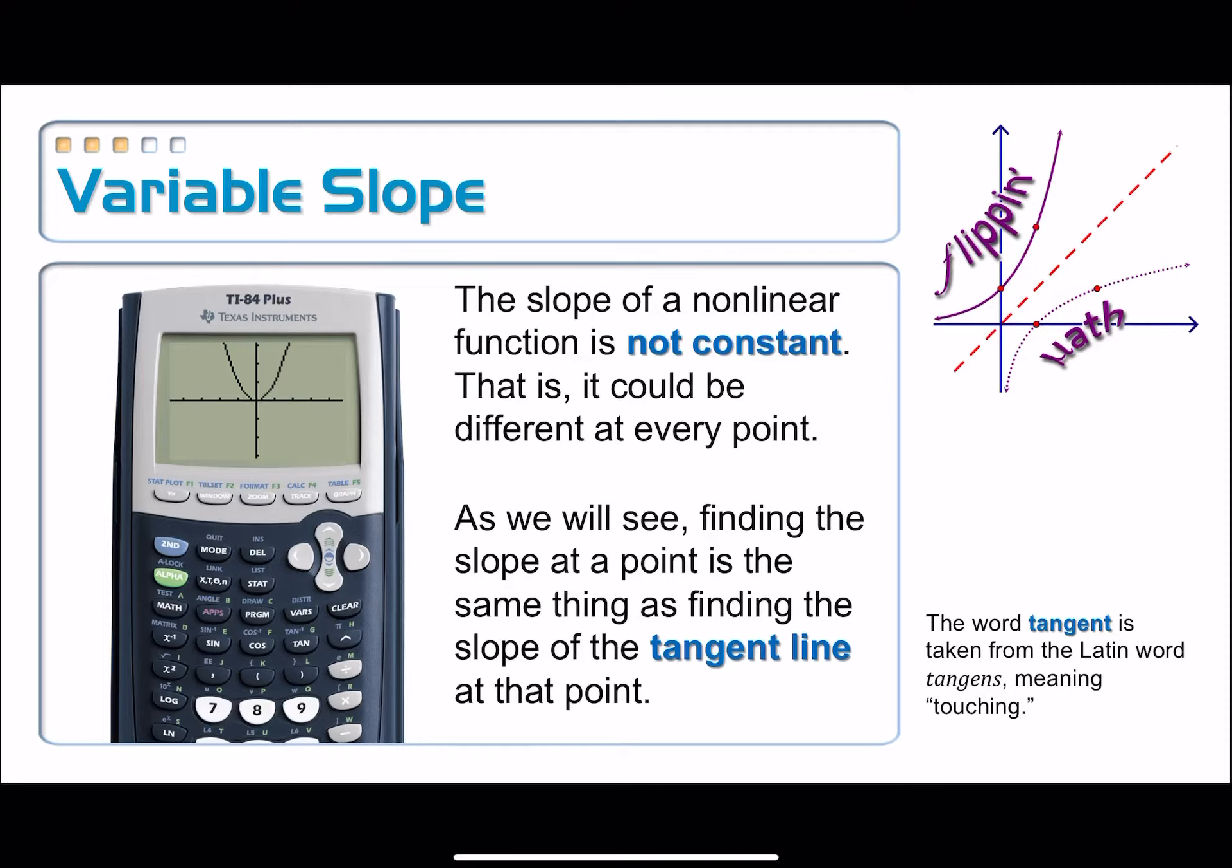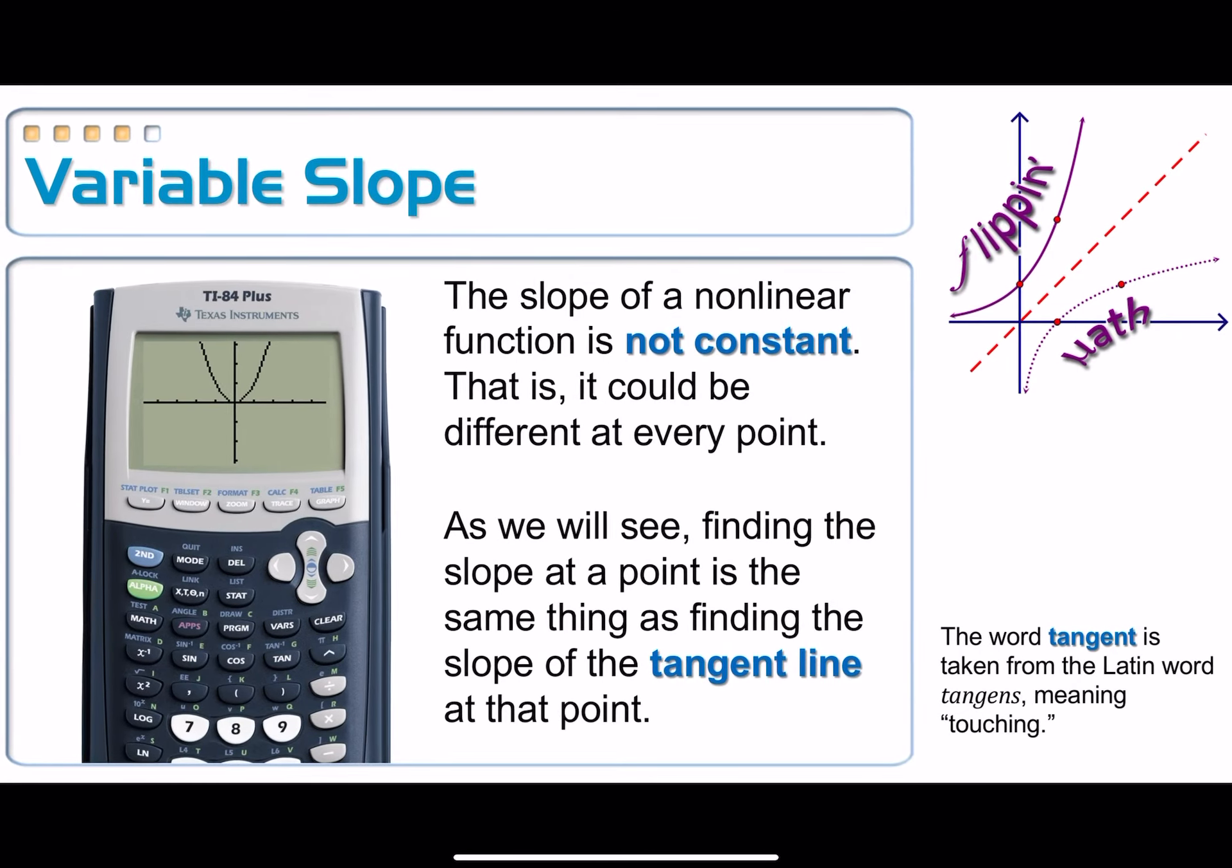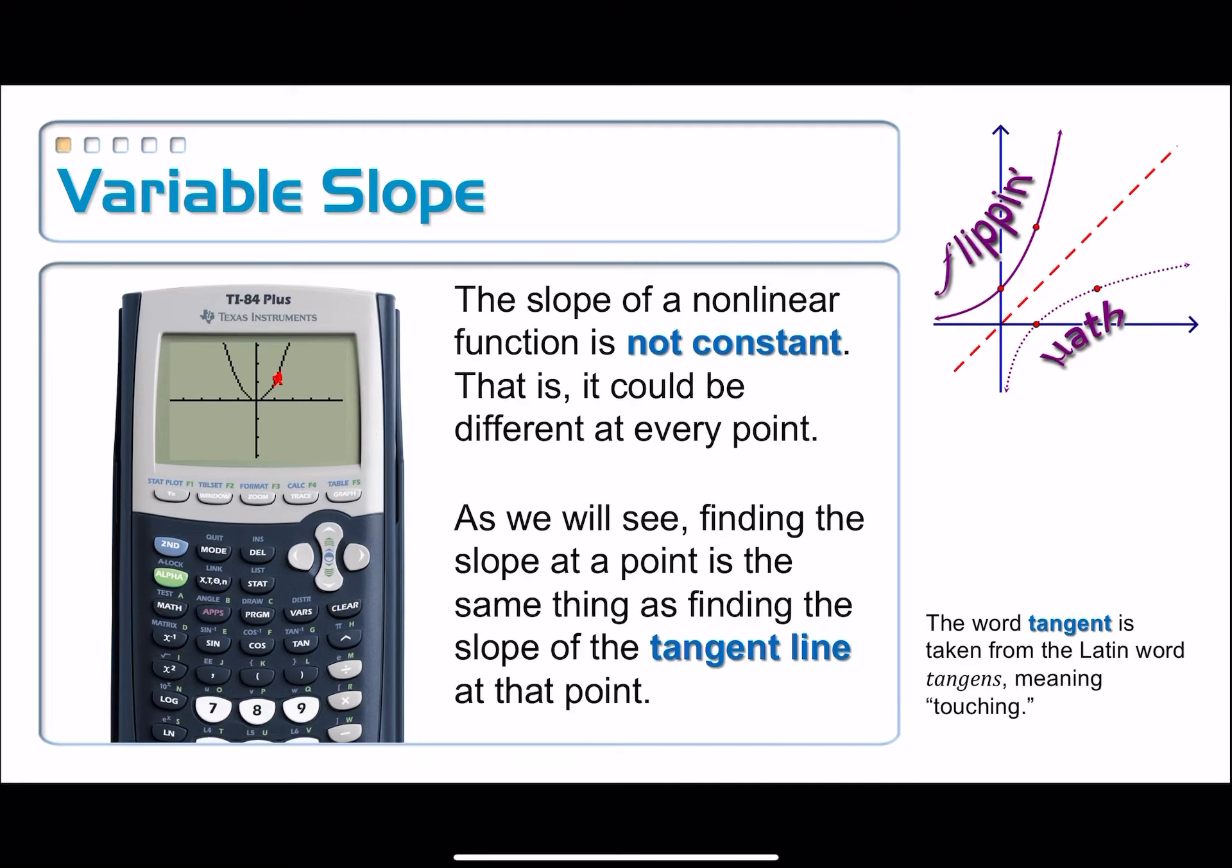So we're going to see also in the coming lessons that finding the slope at any particular point on this graph, maybe right there, is the same thing as finding the slope of a tangent line. So you might think, like, we first saw that word tangent back in geometry. And it comes from a Latin word that means touching, tangents, as you can see over there. All right. So in the next video, we're going to look at the idea of a tangent line in a little bit more detail. Thank you.